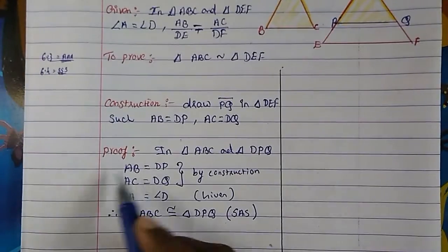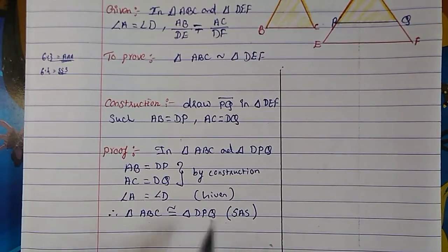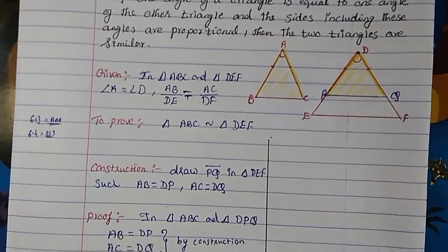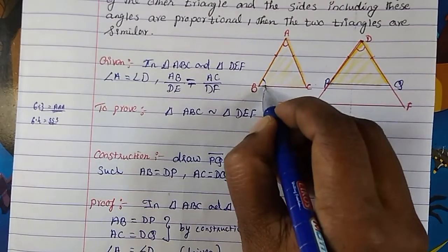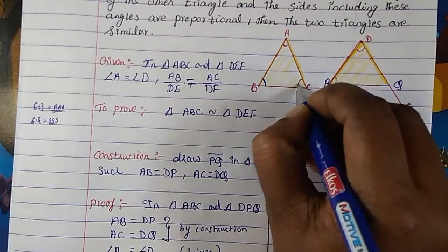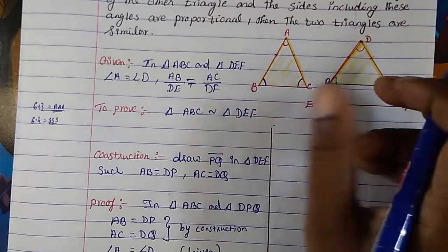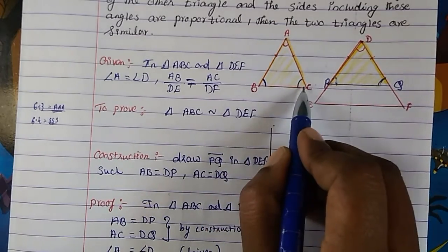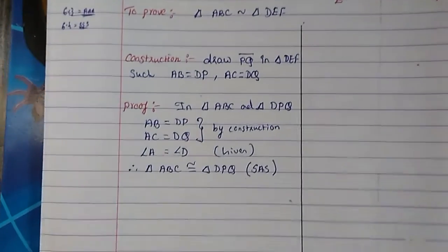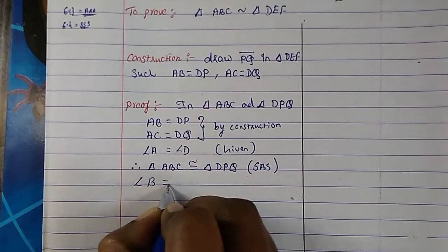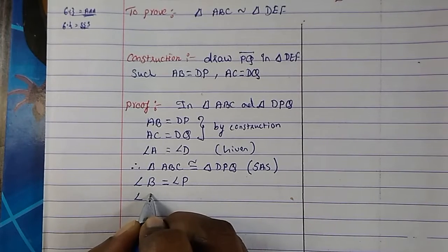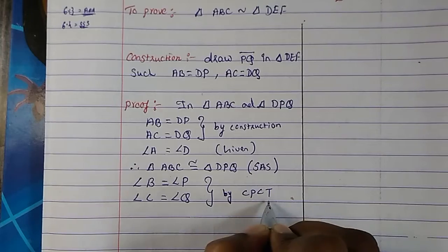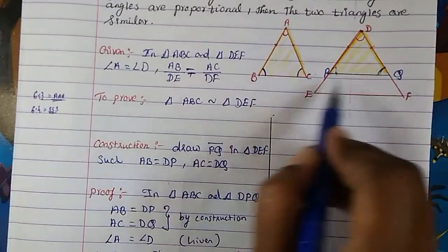By the SAS criteria, both triangles are congruent, meaning all their sides and angles are equal. Therefore, angle B is equal to angle P and angle C is equal to angle Q, by corresponding parts of the congruent triangles (CPCT).